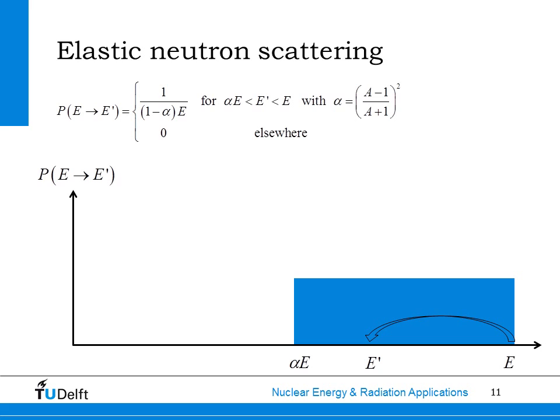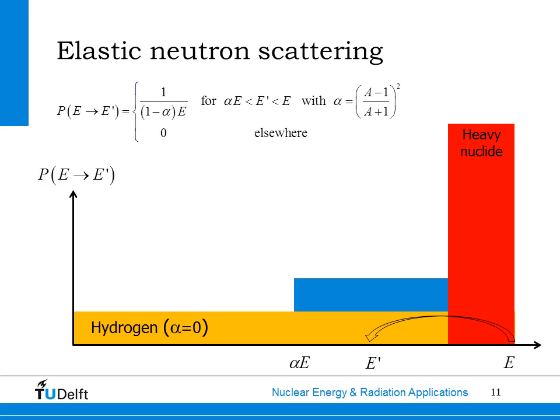If the target nucleus is lighter, the energy range of the scatter event becomes larger. Hydrogen, for example, has an alpha value of zero and the scatter energy range is the whole interval from E down to zero. But if we have a heavy nuclide such as uranium, the energy range over which a neutron can scatter becomes very small, and a neutron needs many collisions to slow down from the fast energy range to the thermal energy range.